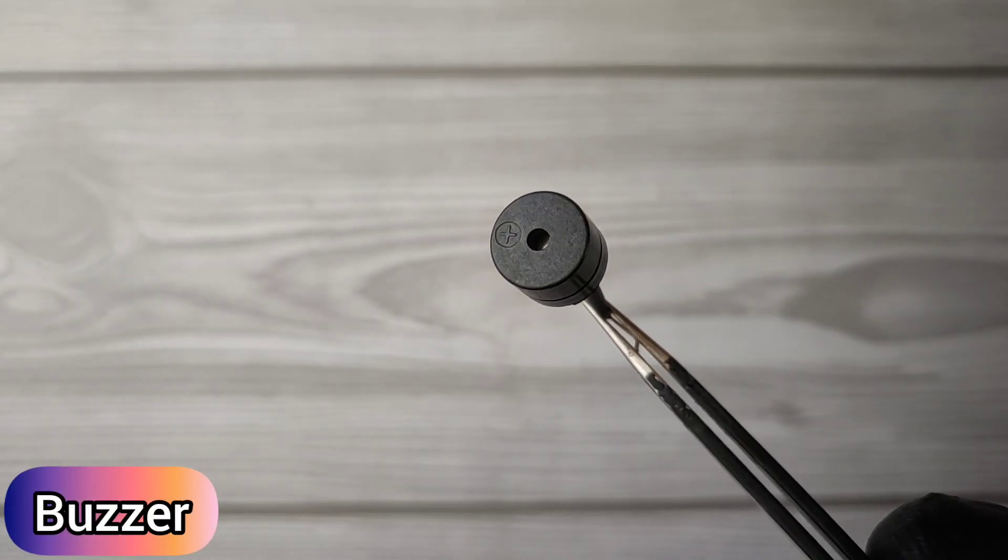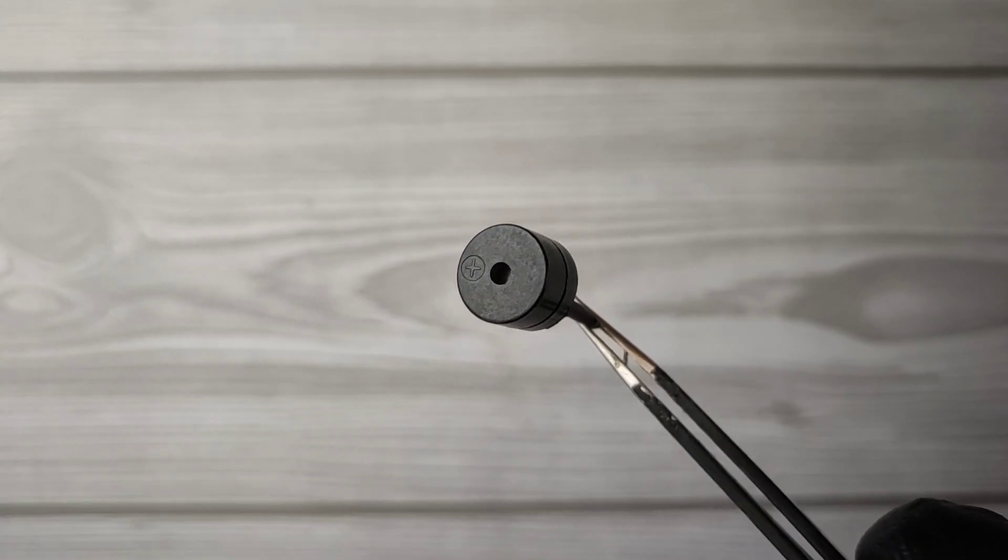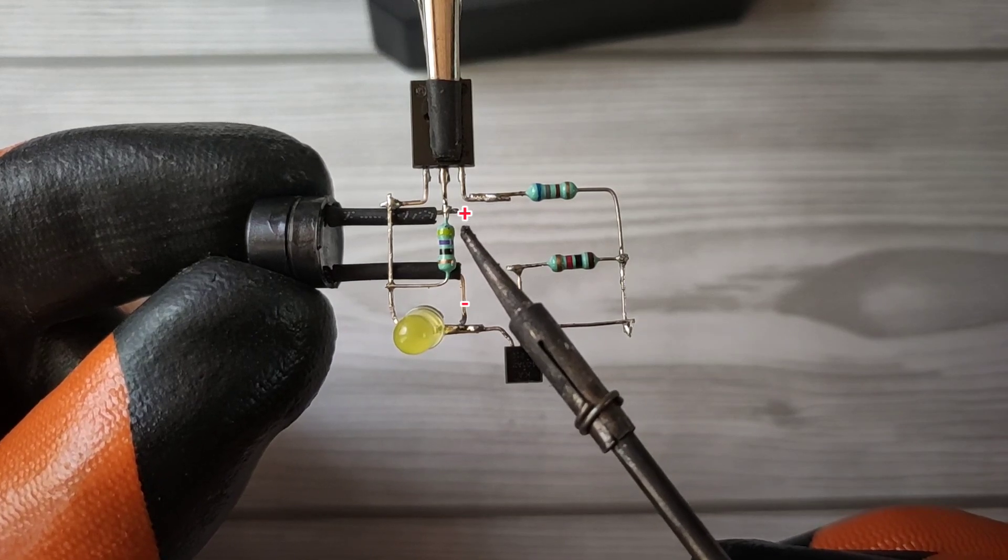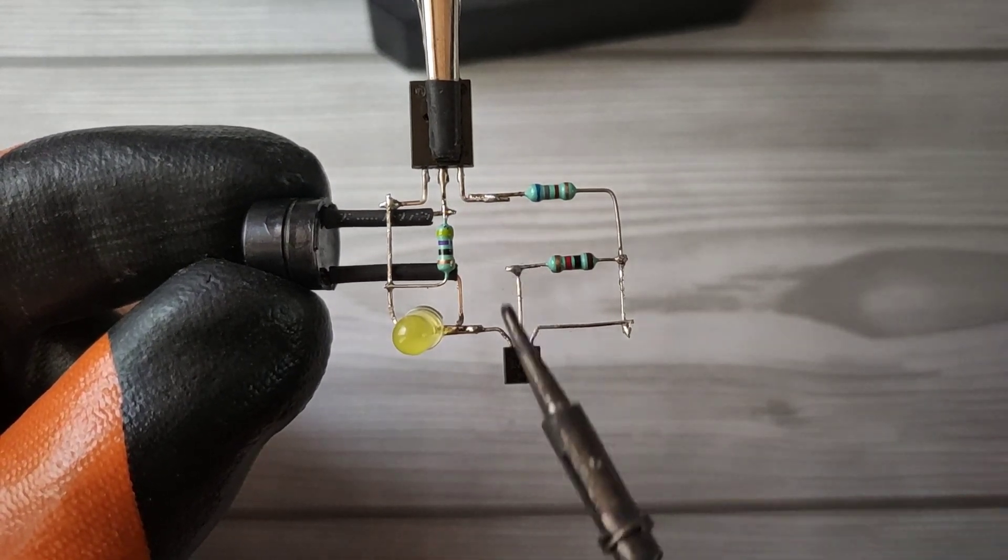Now take a buzzer and solder the buzzer positive on the collector of the transistor and buzzer negative on pin 3 of the shunt regulator.